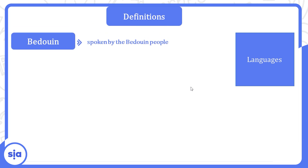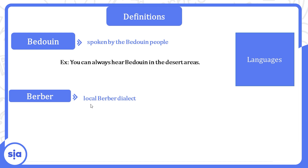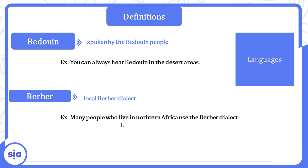Now let's talk about some languages. Bedouin — اللغة البدوية — spoken by the Bedouin people; you can always hear it in desert areas. Berber — اللغة البربرية — many people who live in northern Africa use the Berber dialect — ناس كتير عايشين في شمال أفريقيا بيتكلموا اللهجة البربرية.